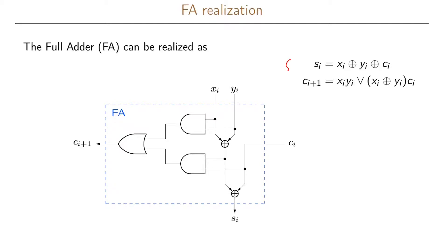Here we have our two expressions and the circuit realization of the full adder. We can see three inputs: xi, yi, and ci. The sum si is the XOR of the three inputs: xi and yi go into an XOR gate, whose output feeds into a second XOR gate with ci. For the output ci+1...